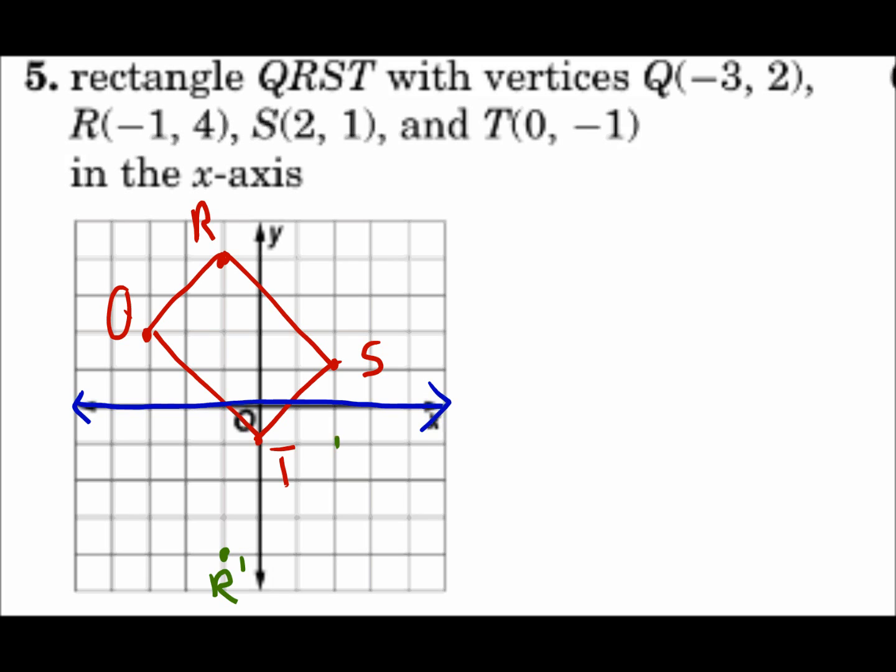S is 1 above. S prime is 1 below. Notice these are directly below each of those, because you go straight to the line of reflection, hitting it at a right angle, and keep going straight through the other side. T is 1 below. T prime is 1 above. Q is 2 above. And Q prime is 2 below.